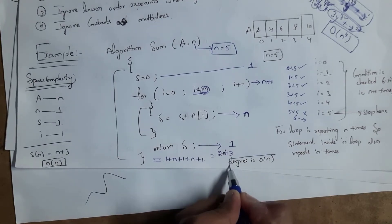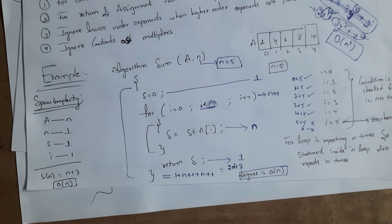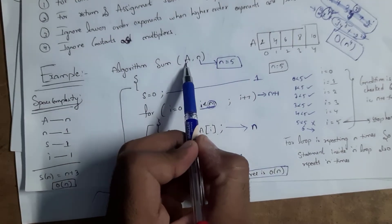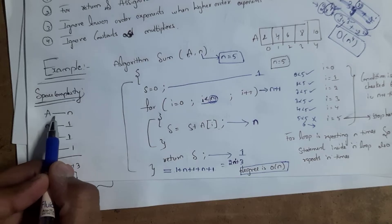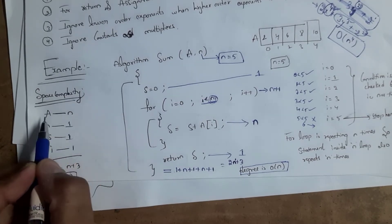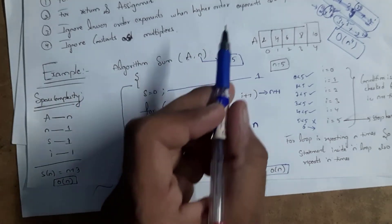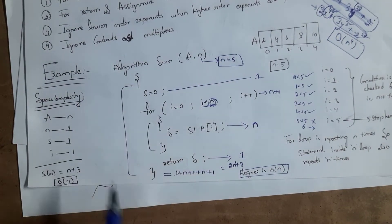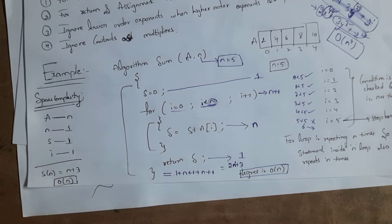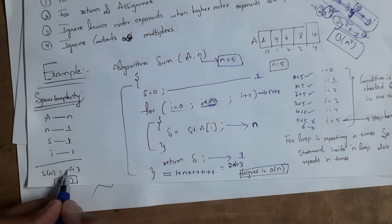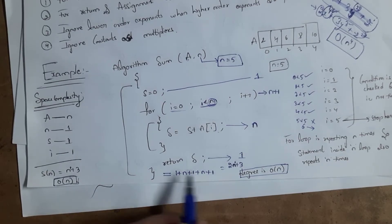The highest order exponent is n to the power of one, which is just n, so the time complexity is O(n). Next, for space complexity, we count the variables: a (array with n elements), n, s, and i. Array a has n elements, so its count is n. n, s, and i each have a count of one. Total is n plus one plus one plus one equals n plus three. The highest exponent is n, so space complexity is O(n). Both time and space complexity are O(n) for this algorithm.